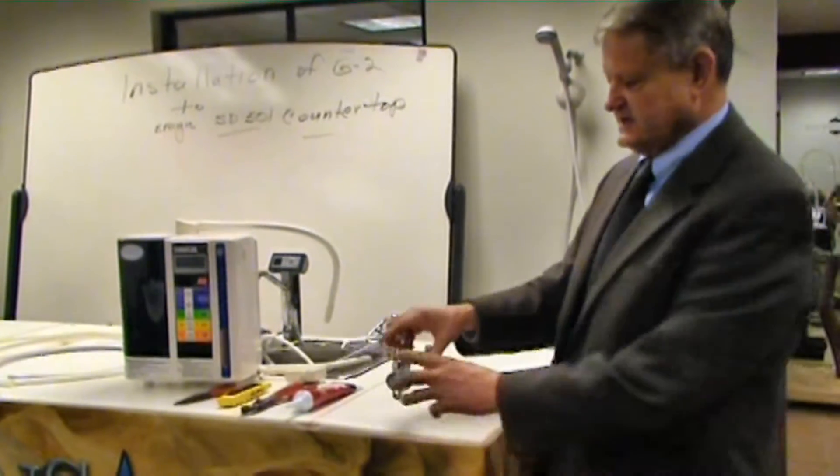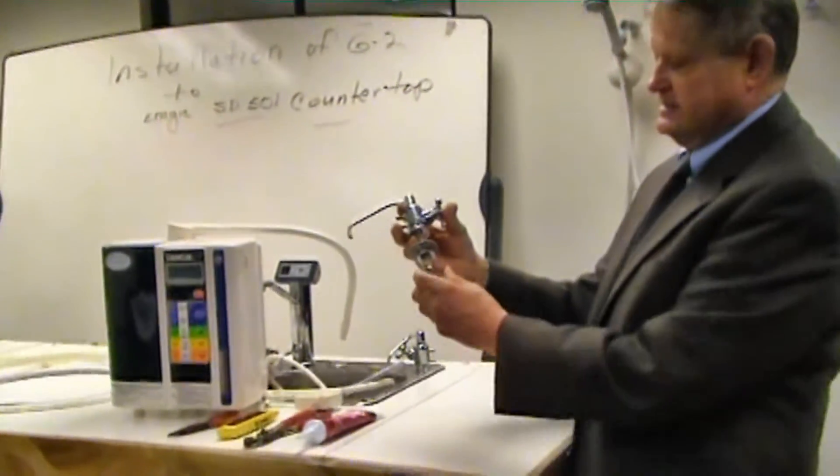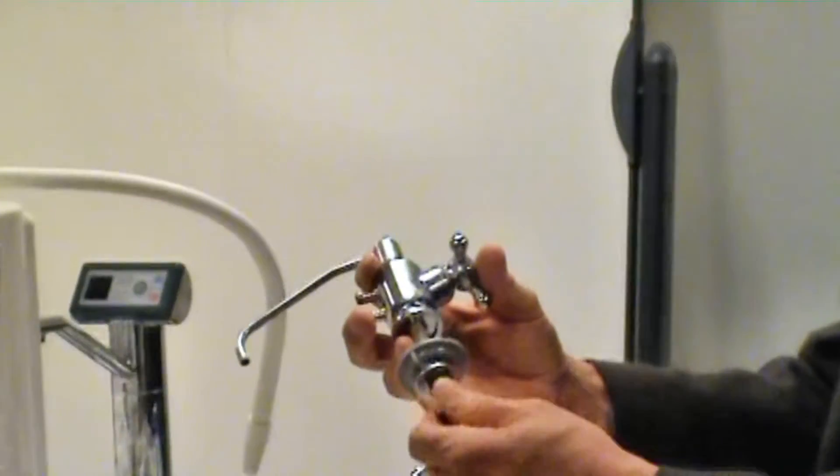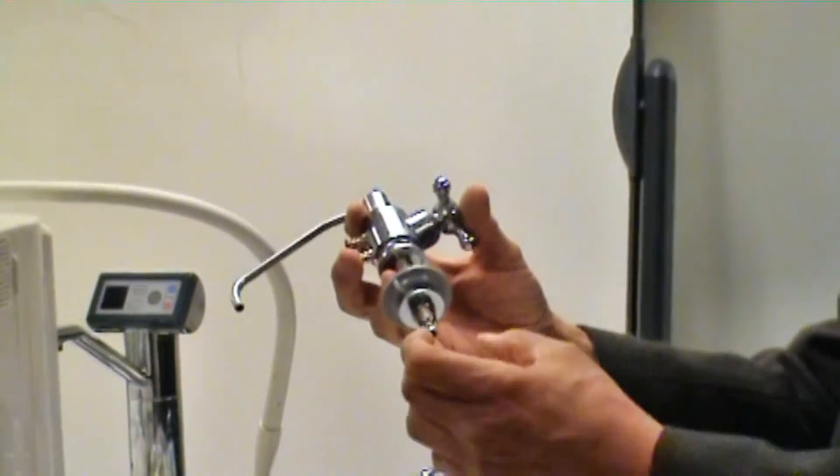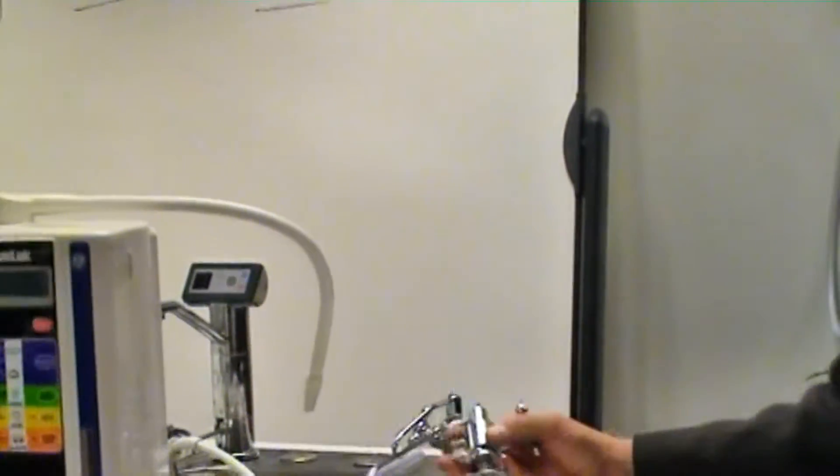As you can see, here is the G2 faucet. Basically, it has a compression nut which the 3/8 hose goes on. I will demonstrate that right now.